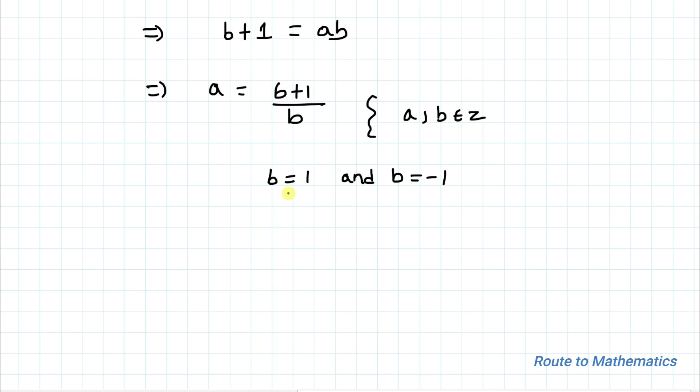So let's just find the value of a for each value of b. For b = 1, we have a = (b+1)/b, so we have (1+1)/1, we are getting 2.